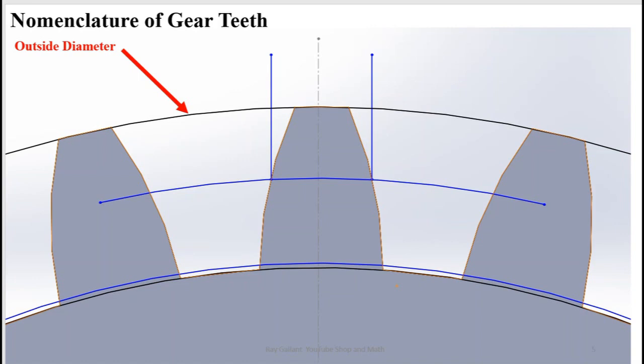The outside diameter is the actual outside diameter of the gear. In some cases they machine the gear's outside diameter down to make the center distance between gear and gear fit better. But we're not covering that in this video.